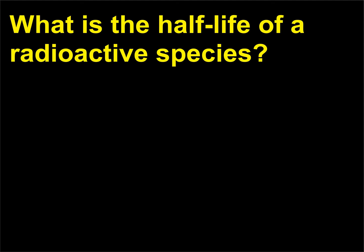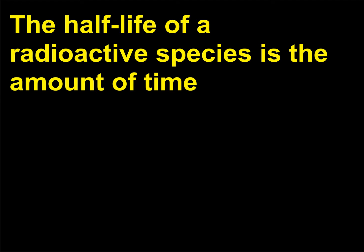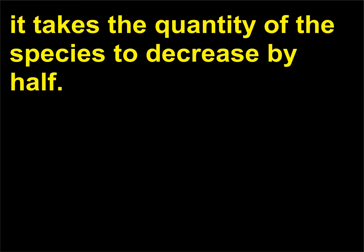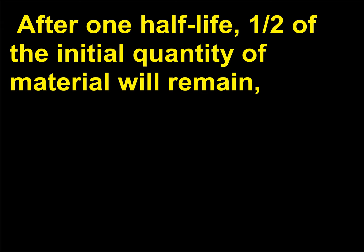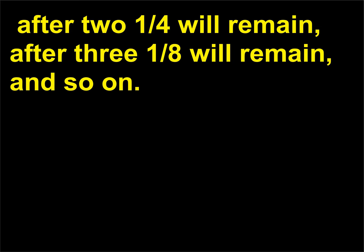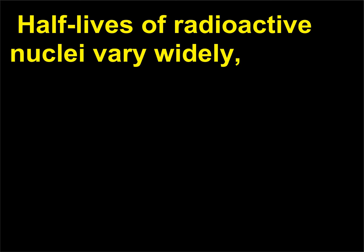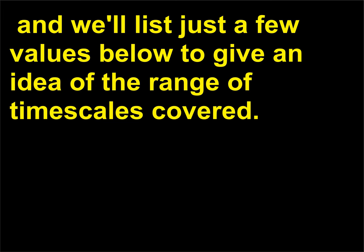What is the half-life of a radioactive species? It is the amount of time it takes the quantity of the species to decrease by half. After one half-life, one half of the initial quantity of material will remain. After two half-lives, one fourth will remain; after three, one eighth will remain, and so on. Half-lives of radioactive nuclei vary widely across a range of timescales.